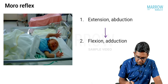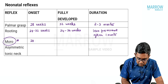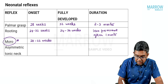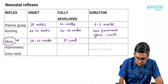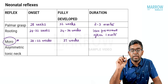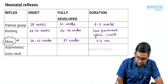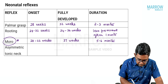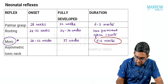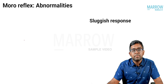Some essential points: the Moro reflex appears between 28 to 32 weeks of gestation and is fully developed by 37 weeks of gestation — meaning it is fully developed only in a term baby. The duration of the Moro reflex is five to six months after birth. This point about duration is a repeatedly asked MCQ question.